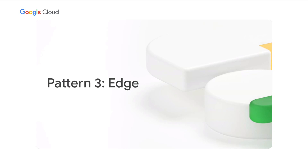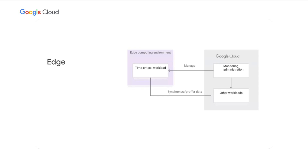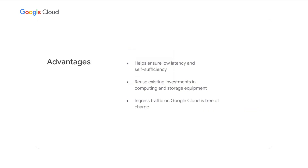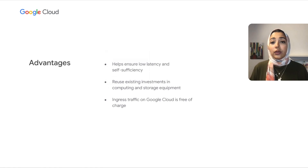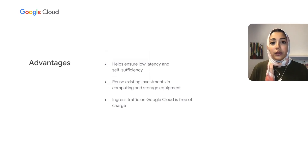Our third pattern is edge. Running workloads in the cloud requires that clients have fast and reliable internet connectivity. There are scenarios when you cannot rely on continuous connectivity, such as stores or supermarkets that might be only connected occasionally or use links that are not reliable enough for business-critical transactions. With this pattern, you run time and business-critical workloads locally at the edge of the network, while using the cloud for all other kinds of workloads. In an edge setup, the internet link is a non-critical component used for management purposes and to synchronize or upload data. Remember that ingress traffic to Google Cloud is free, so that makes it easier to communicate back to the cloud with status or data syncs.